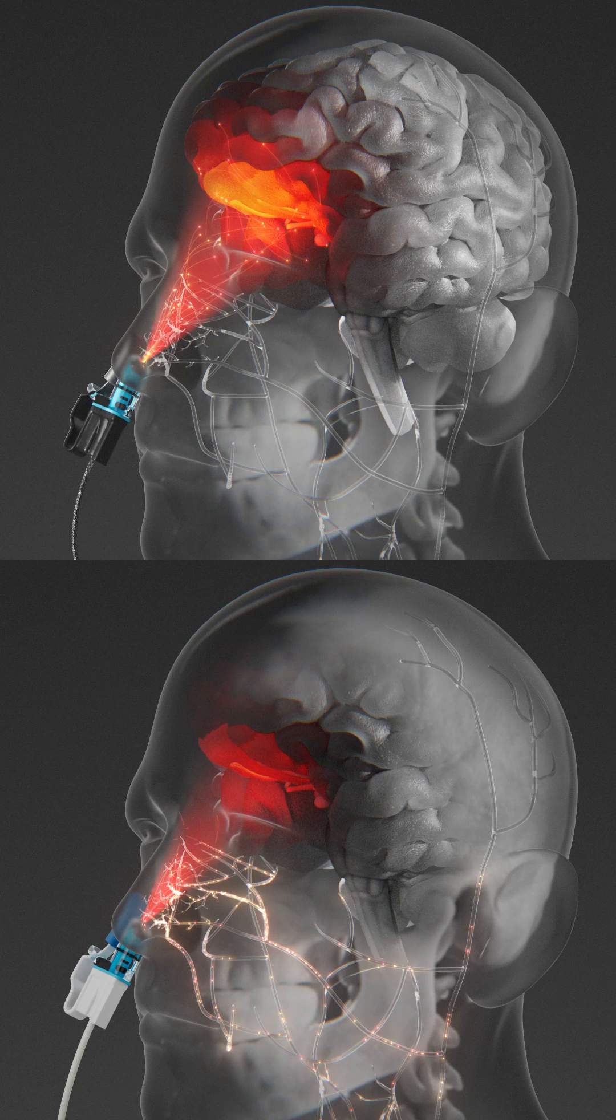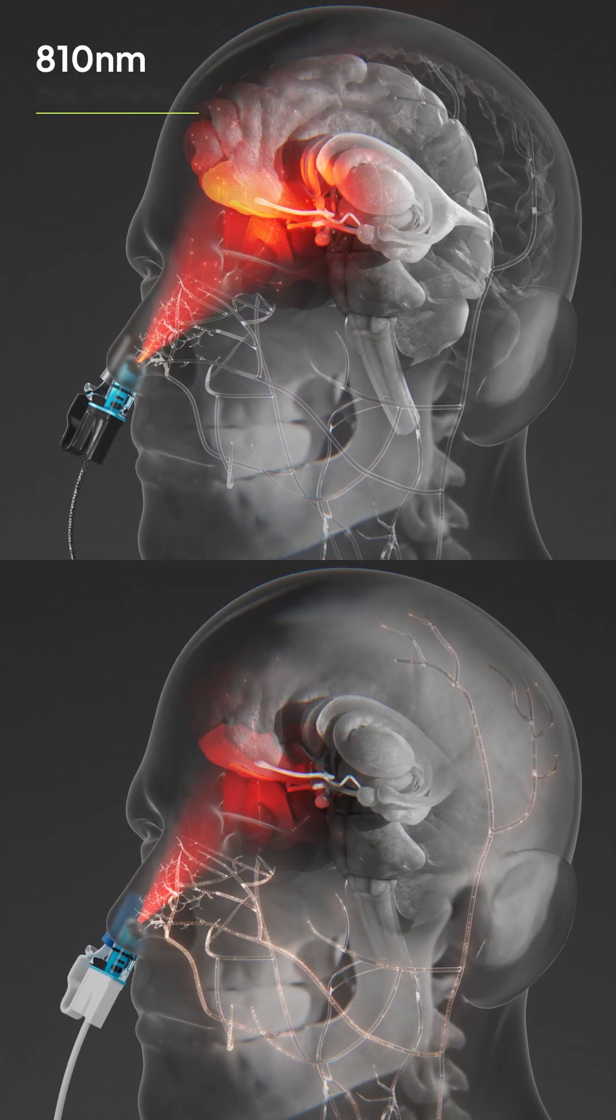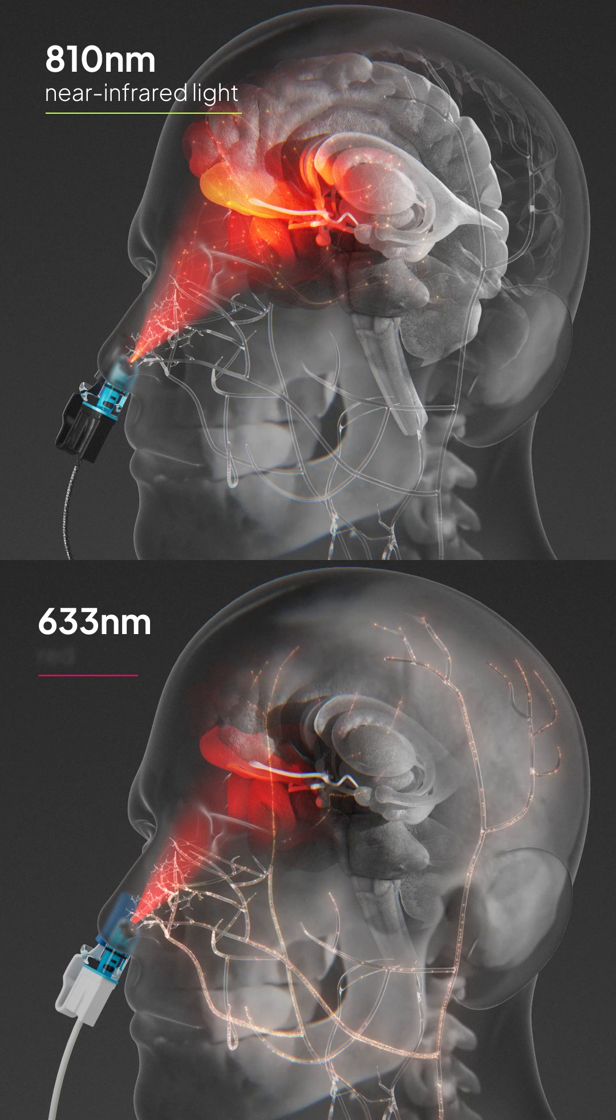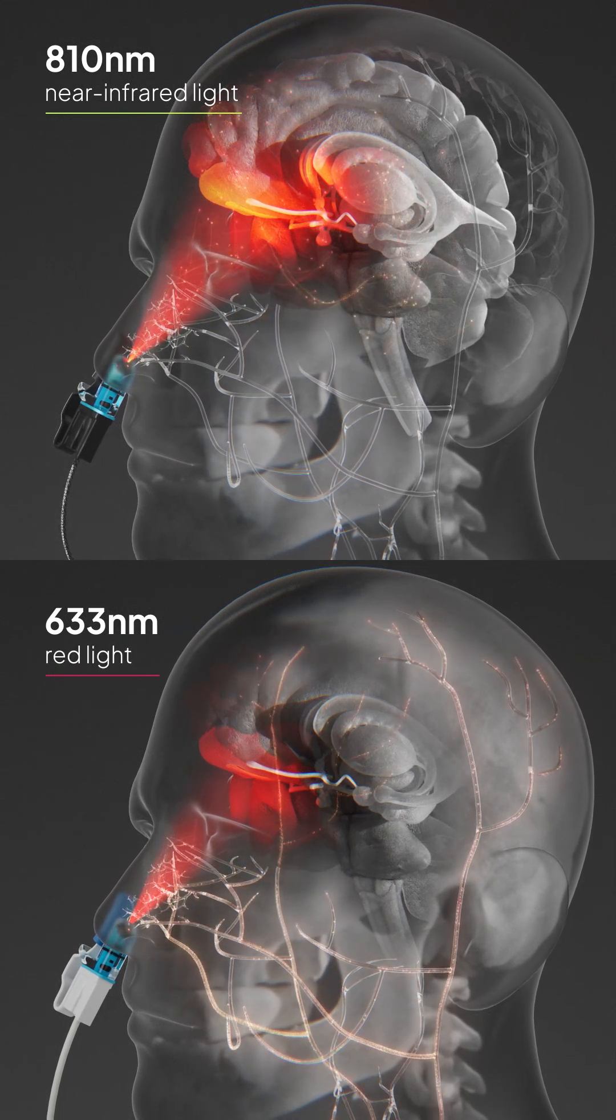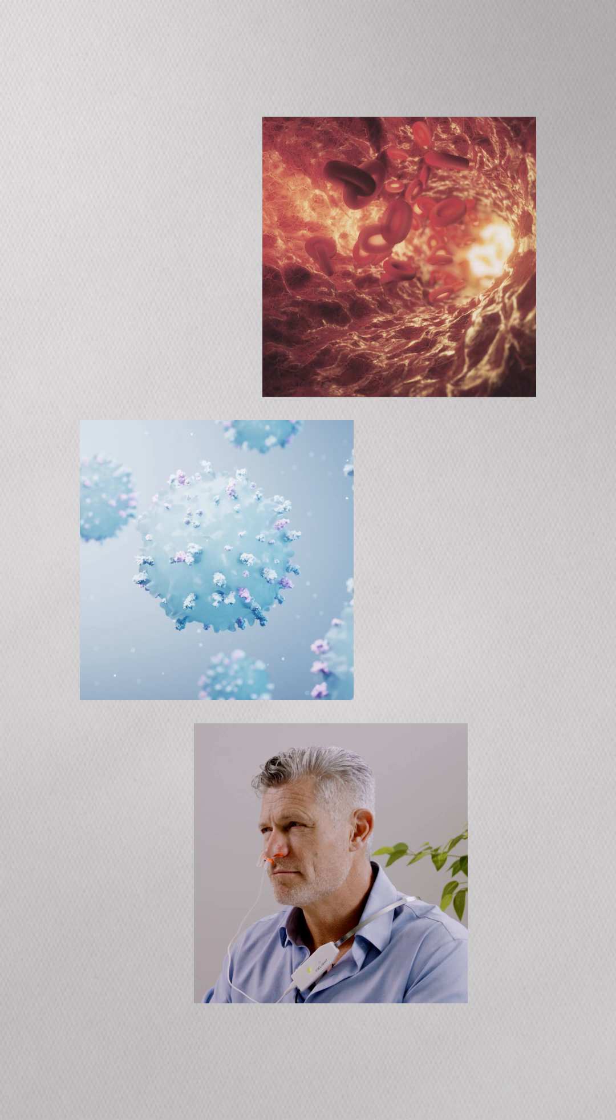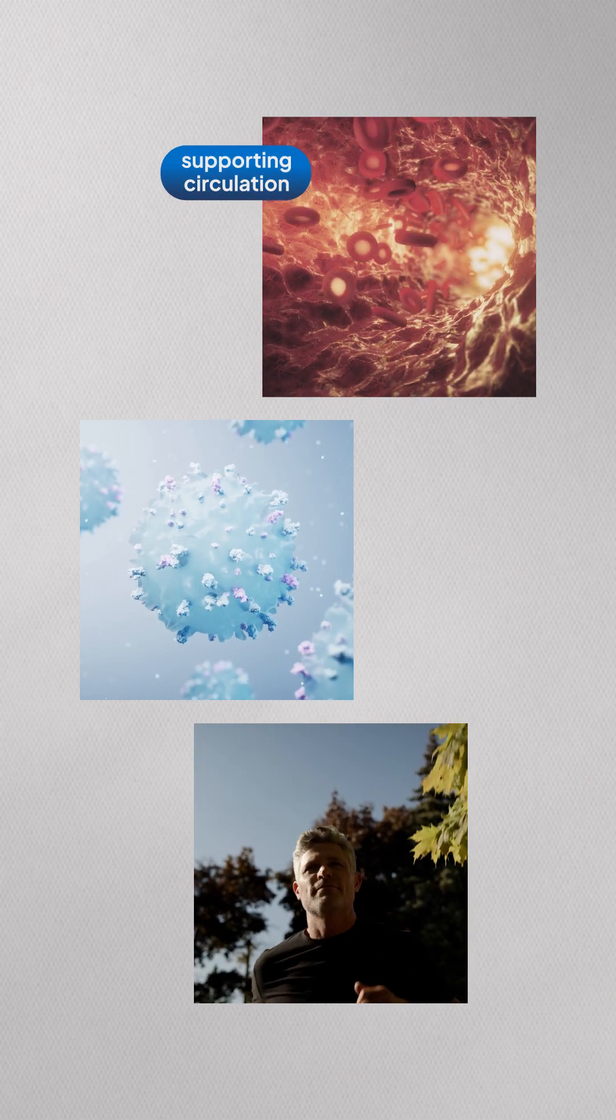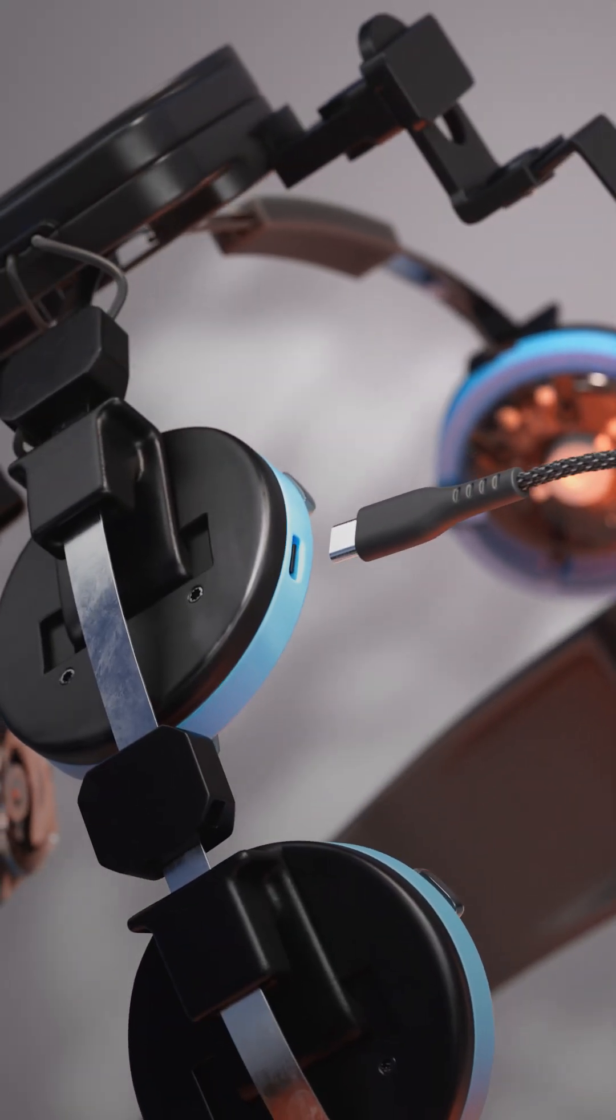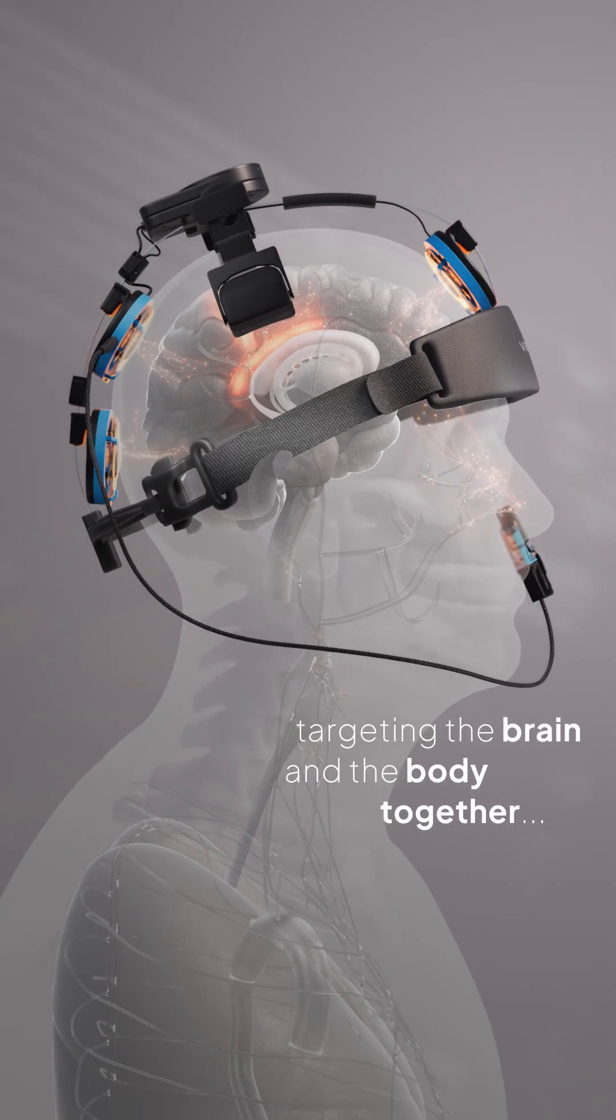810 nanometer near-infrared light penetrates deep into the brain, while 633 nanometer red light is absorbed by blood and capillaries. This makes it ideal for systemic PBM, supporting circulation, immune modulation, and whole body vitality. This is why V Light offers both options, because targeting the brain and the body together leads to more powerful outcomes.